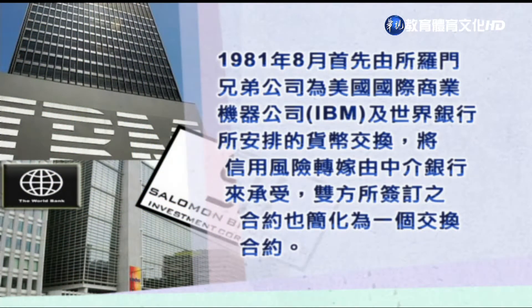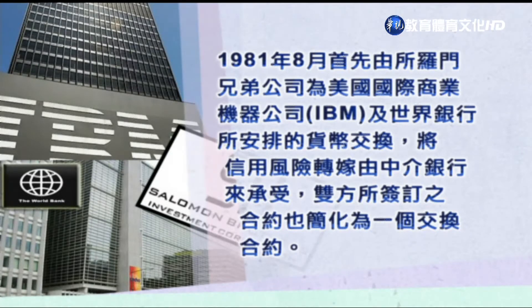介绍完货币交换跟交叉货币交换的流程与利得之后，来看过去货币交换的一个例子。全球第一笔的货币交换交易是1981年8月，首先由所罗门兄弟公司为美国国际商业机器公司（IBM），以及世界银行安排了货币交换。这样的货币交换把信用风险转嫁由中介银行也就是所罗门兄弟公司来承受，双方签订的合约简化成一个交换的合约。这是因为当时世界银行发行的是欧洲美元的债券，但实际上它需要的是德国马克跟瑞士法郎货币，所以居间由所罗门兄弟公司安排，找到了跨国企业IBM来进行货币交换。